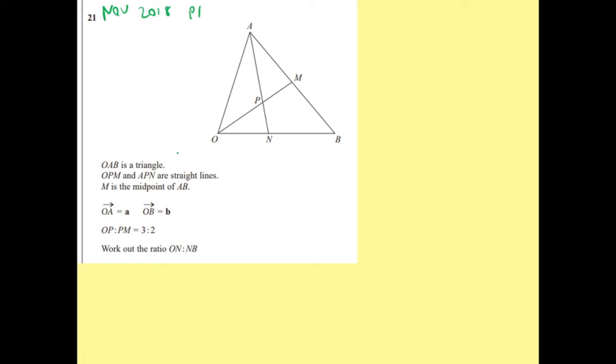Okay, OAB is a triangle. OPM is a straight line. APN is a straight line. M is a midpoint of AB. So let's make that a half. Let's make that a half.